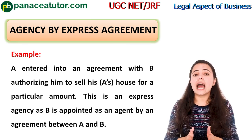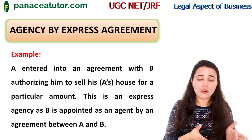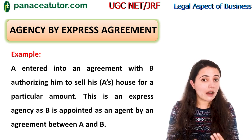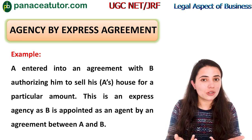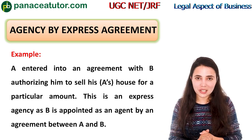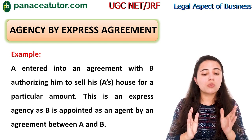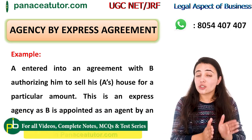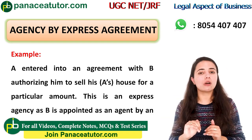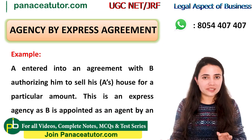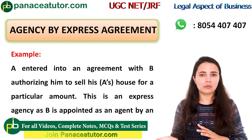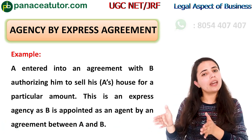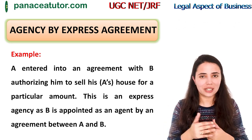Express agreement means the agreement has taken place either in oral or written form. When we sign or verbally agree that 'you will act on my behalf, you will act as my representative,' an agency is created. For example, A entered into an agreement with B, authorizing B to sell A's house for a particular amount. A, the owner of the house, authorized B expressly. This created a principal-agent relationship, and B will now work on A's behalf. This is an agency created by express agreement.